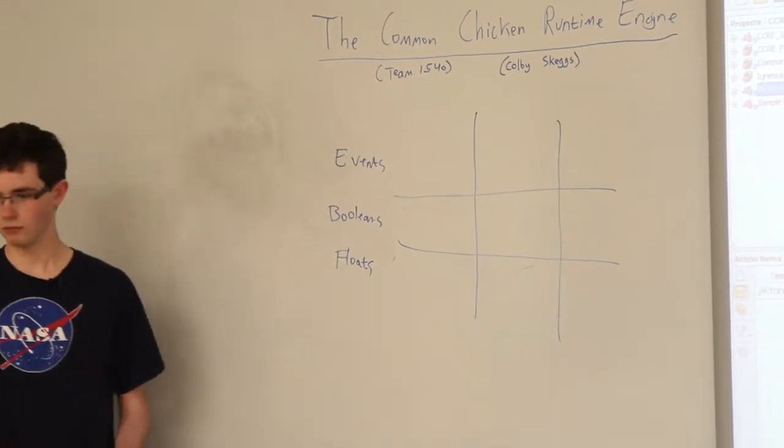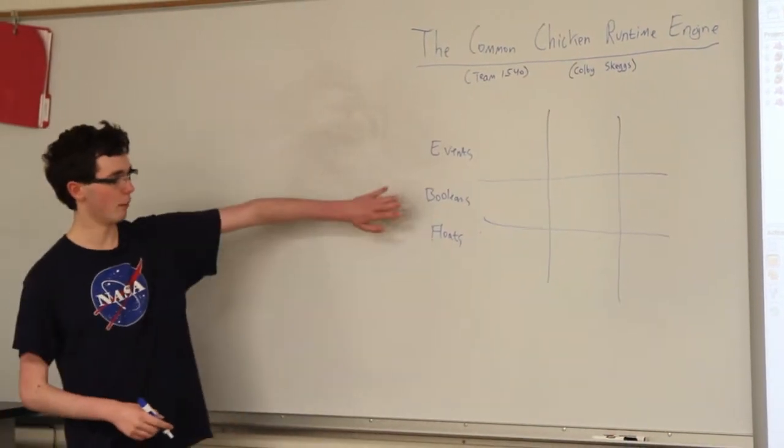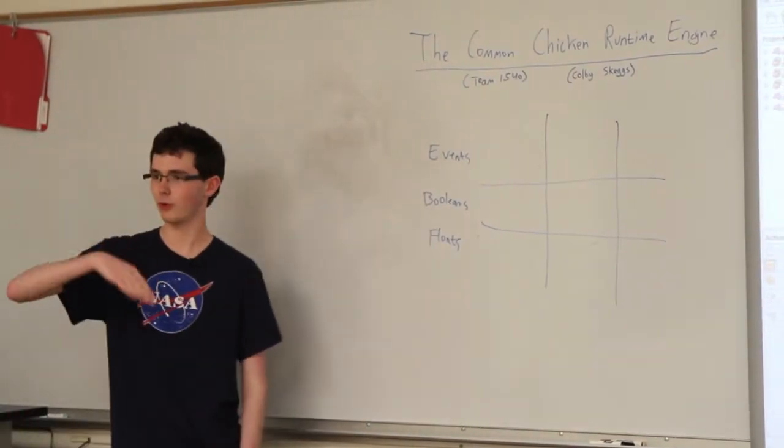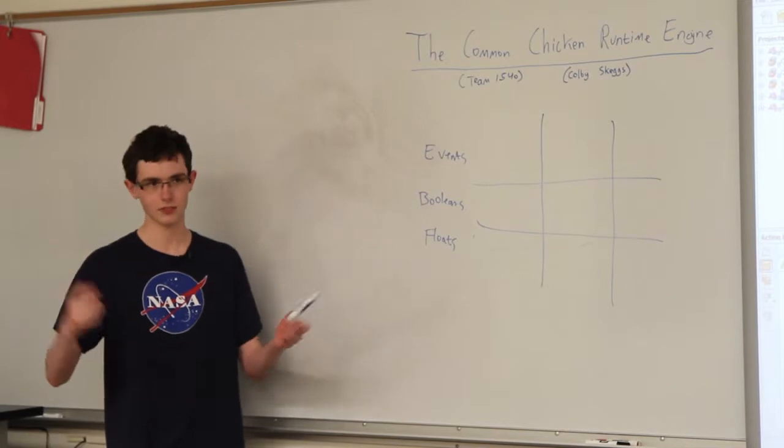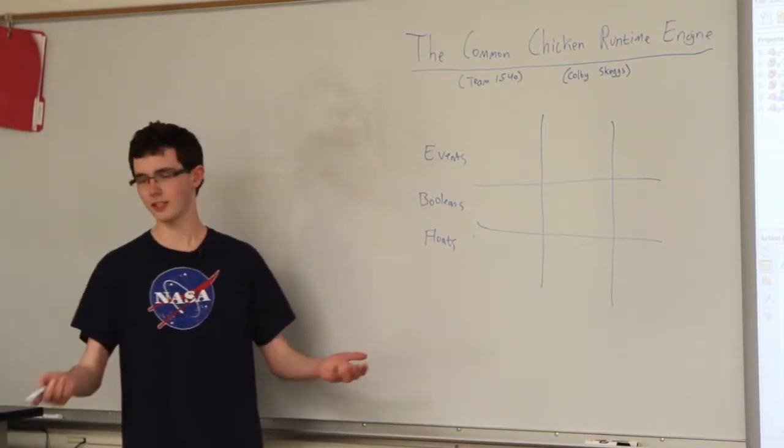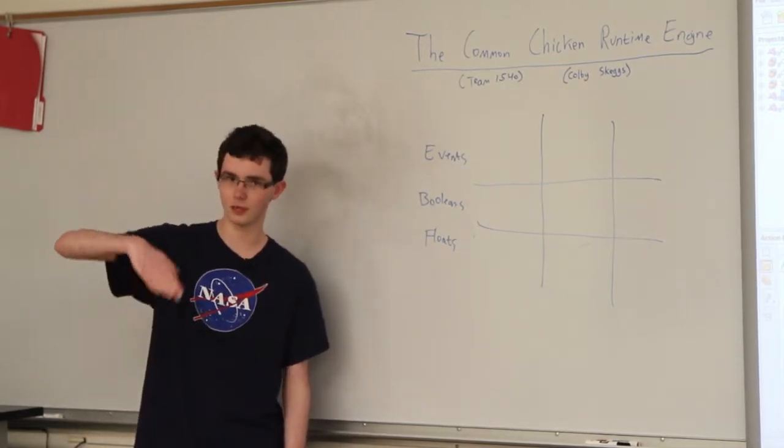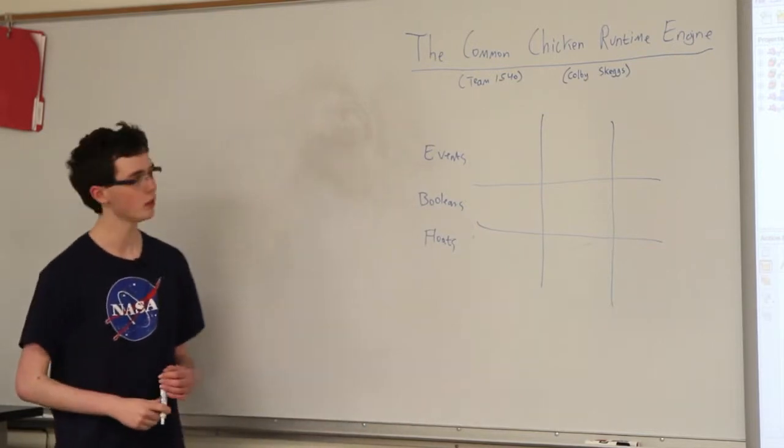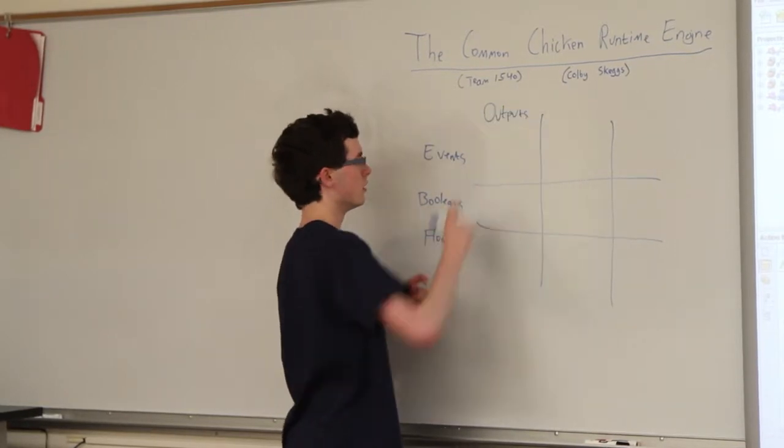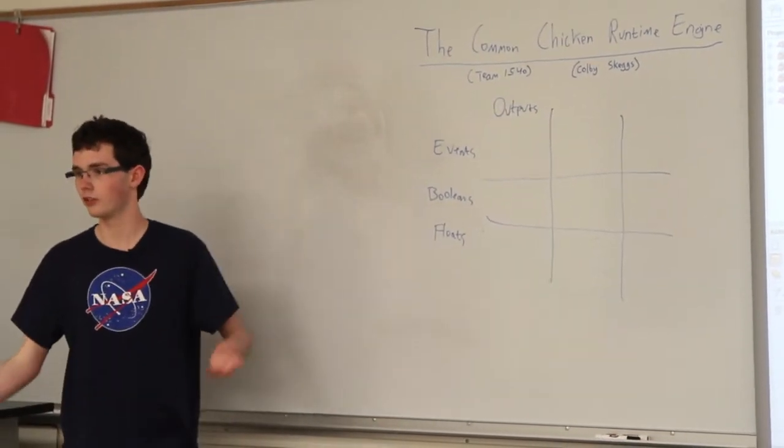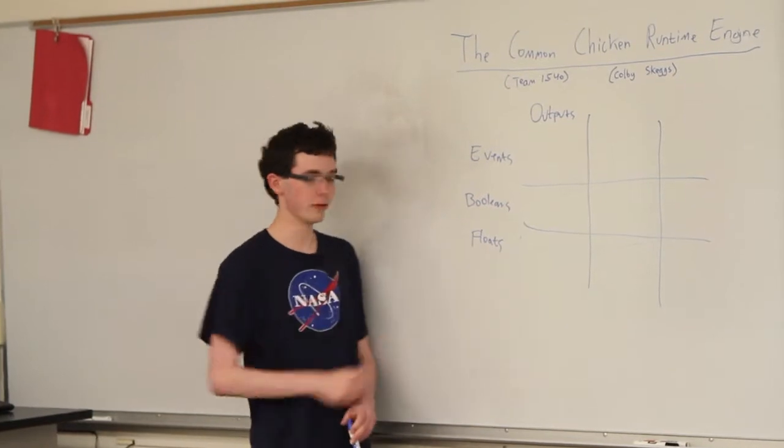Events being button is pressed, autonomous finished, something that happens at a time. Booleans are on or off, solenoid is actuated or deactuated, compressor is on or off, something like that. And floats, that's a technical term for a number, so like a motor is a float. It's some gradient amount of speed that it runs at.